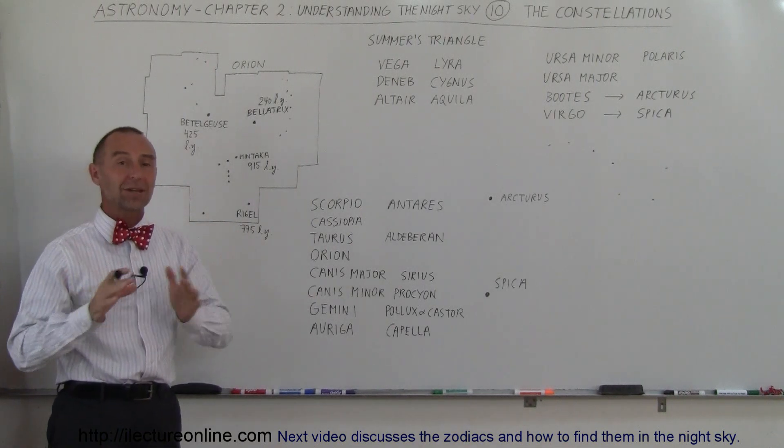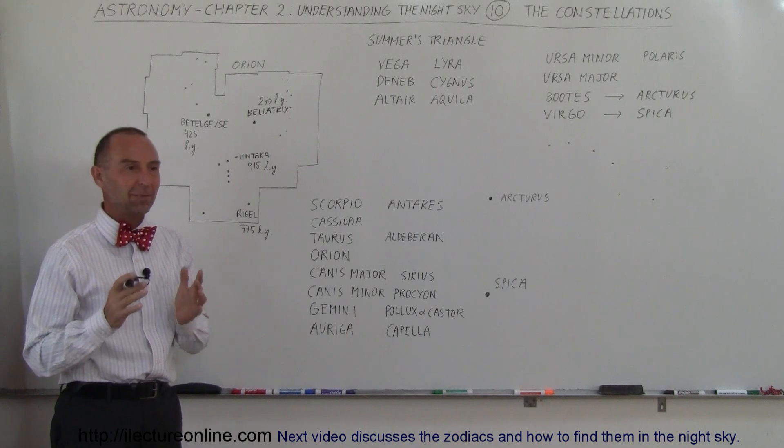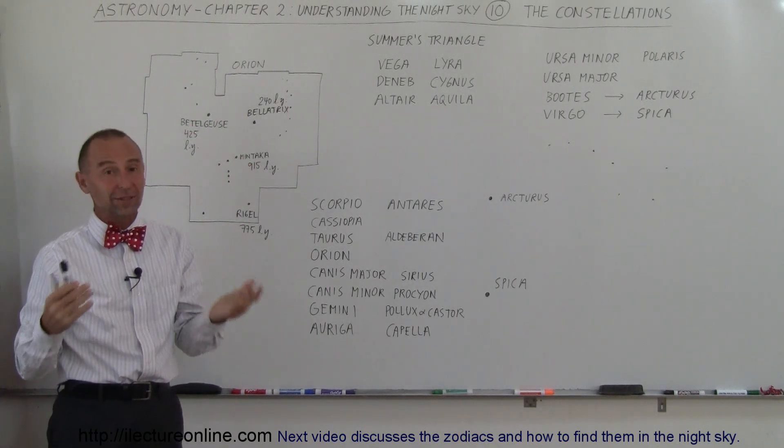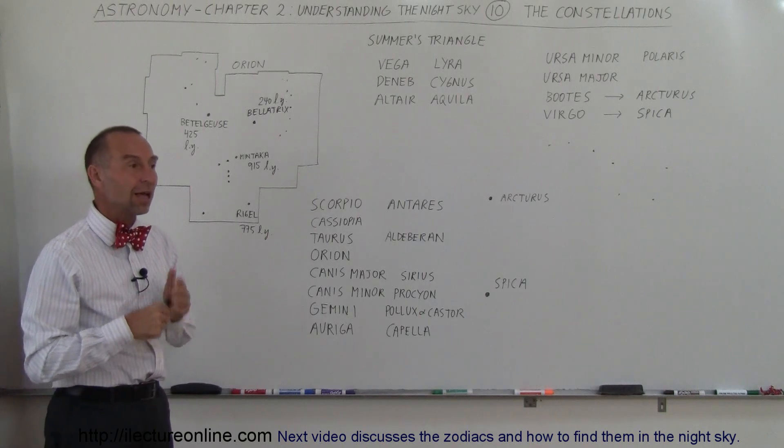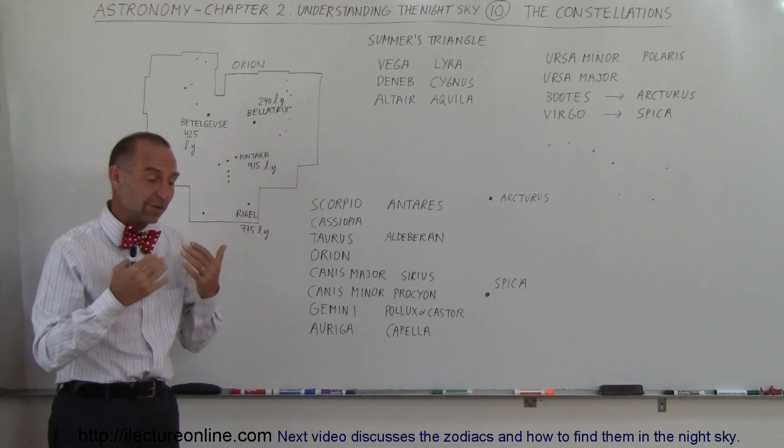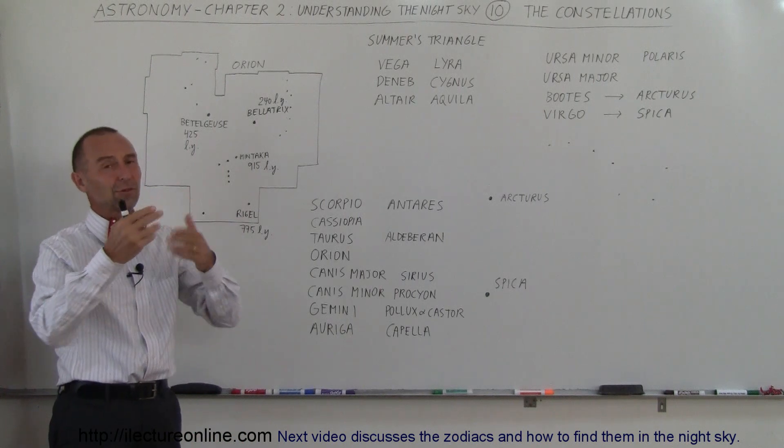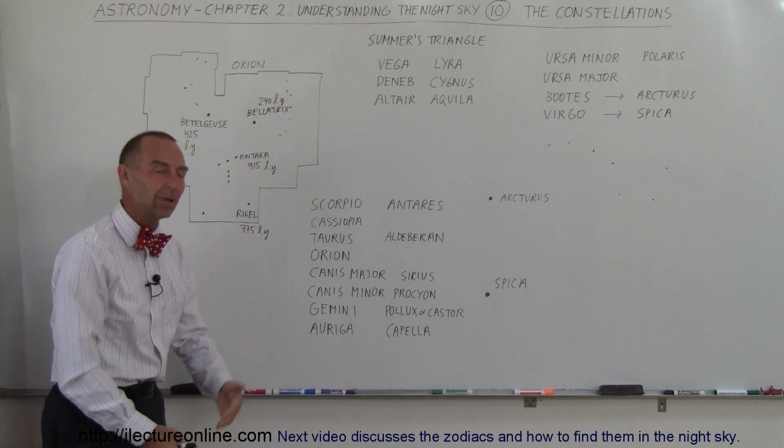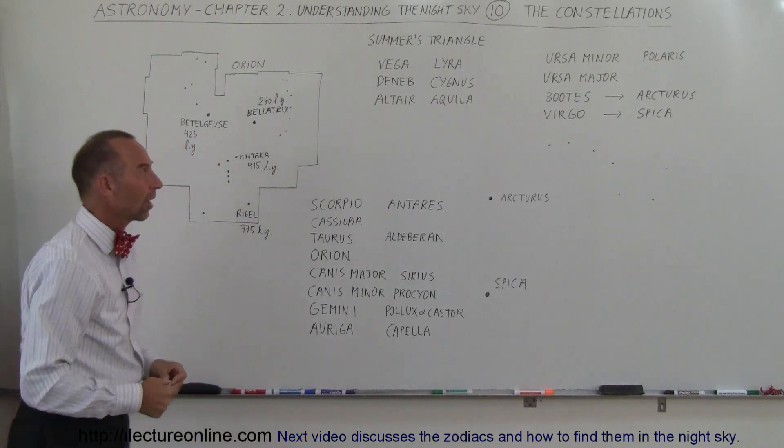Now of course, at any one time you can never see all 88 at the same time because you're always facing different directions of the sky, different times of the night and different times of the year. And also constellations that can only be seen from the southern hemisphere cannot be seen in the northern hemisphere and vice versa. The ones that we can see in the northern hemisphere cannot be seen by people living far down towards the South Pole.